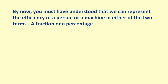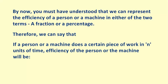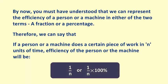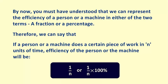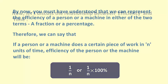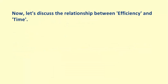A fraction or a percentage. Therefore, if a person or a machine does a certain piece of work in n units of time, the efficiency of that person or machine will be 1/n, or (1/n) × 100%. I hope the concept is a bit clearer to you now.